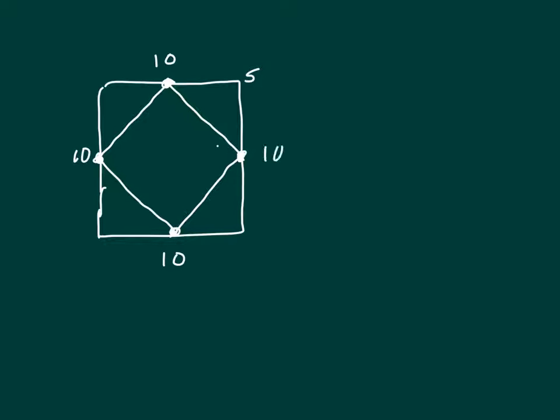And we're trying to figure out the least possible area for this inscribed square T. Now watch, if I put some dotted lines through here, these dotted lines...